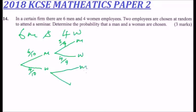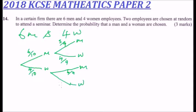On the second branch, if a woman was chosen first, the men are still six, so the probability of choosing a man second is six out of nine. If a woman is to be chosen second, there are three women remaining out of nine.